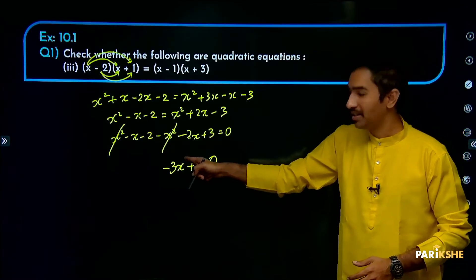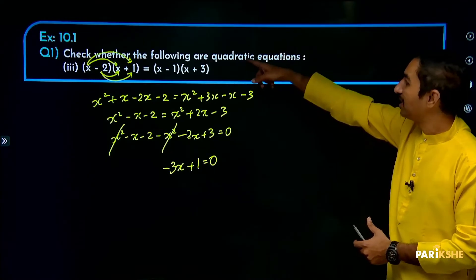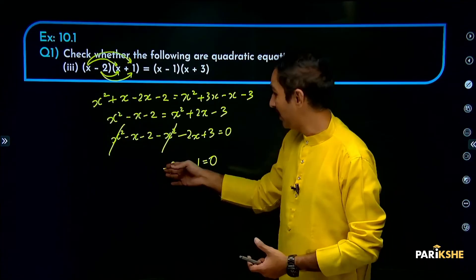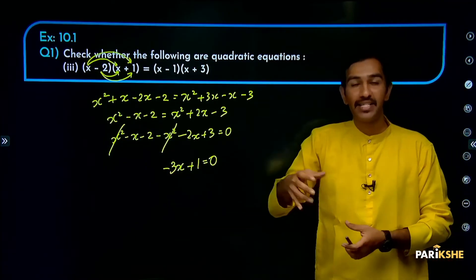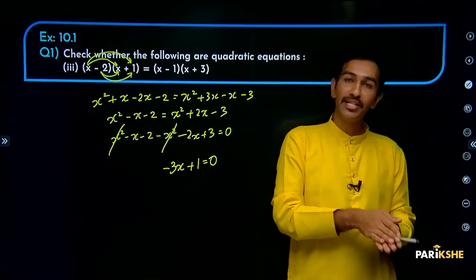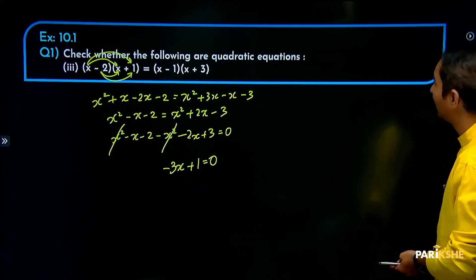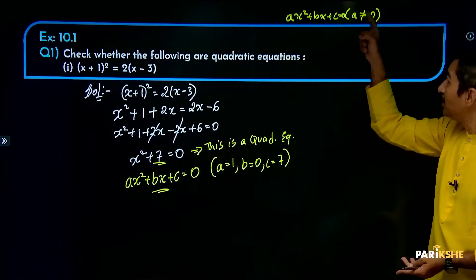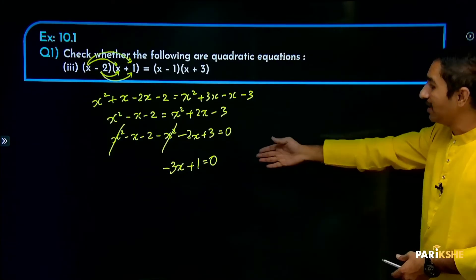So this is a linear equation, not a quadratic equation. In this result a is equal to 0, since the x squared term has disappeared. A is equal to 0, and the condition for a quadratic equation is that a should not be equal to 0. Therefore this is not a quadratic equation. That is the condition.